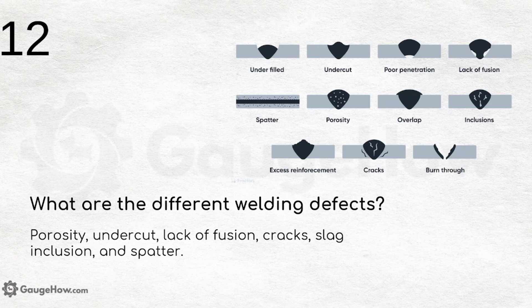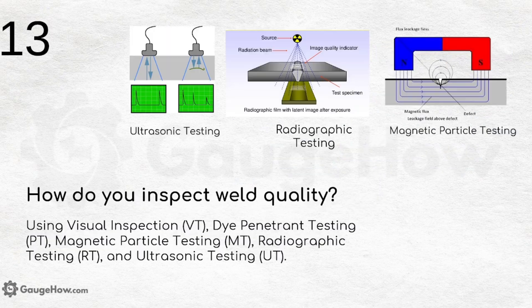What are different welding defects? These include porosity, undercut, lack of fusion, cracks, slag inclusion, and spatter. Even small defects can create a very big impact and cause major failure in an entire system.